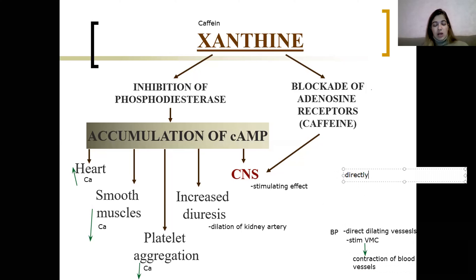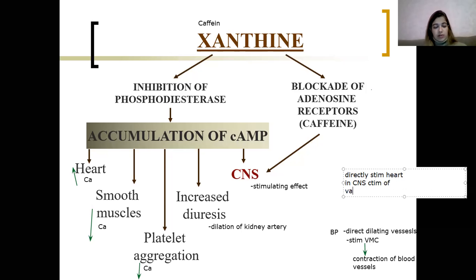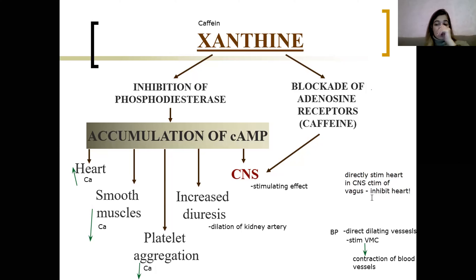Directly, caffeine has a stimulating effect on the heart. But indirectly, through the CNS, it causes stimulation of the vagus nerve center, and the vagus will inhibit the work of the heart. So you have both a stimulating effect and an inhibiting effect, and the final effect differs between patients.